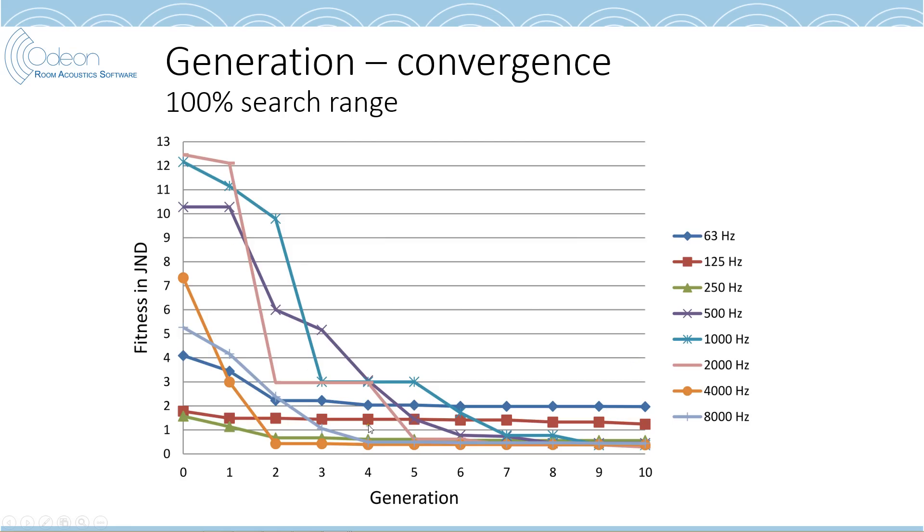You can see here how the fitness function decreases, so you get better and better fitness when you run these generations of testing different absorption data. Each generation is a number of individuals. You typically use two times the number of materials. So, in this case, 22 individuals per generation. And one individual is then 10 point response calculations in terms of calculation effort.